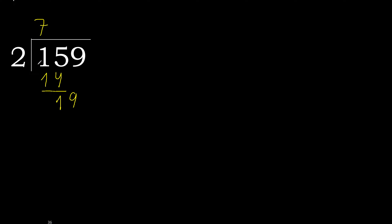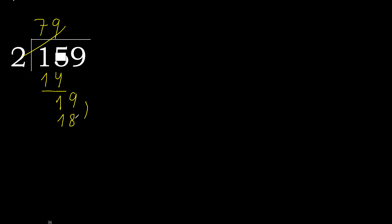Next, bring down 9 — giving 19. 2 multiplied by 9 is 18. 18 is not greater than 19. So 19 minus 18 is 1.